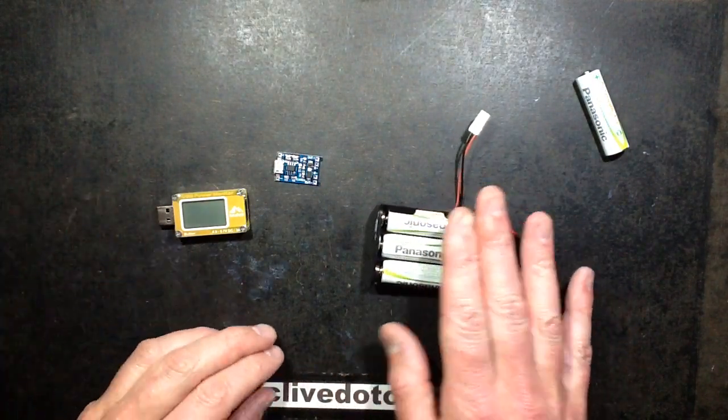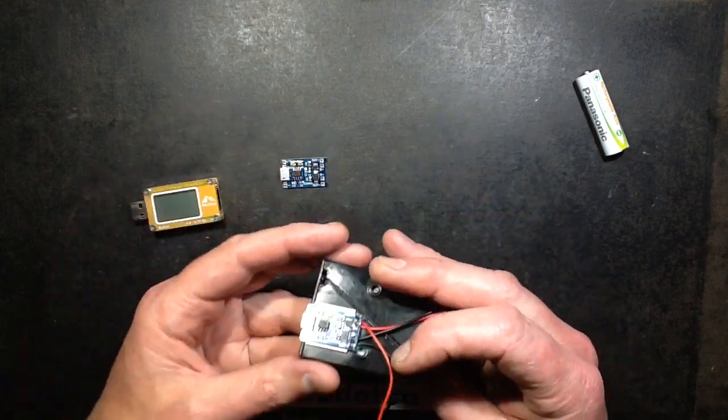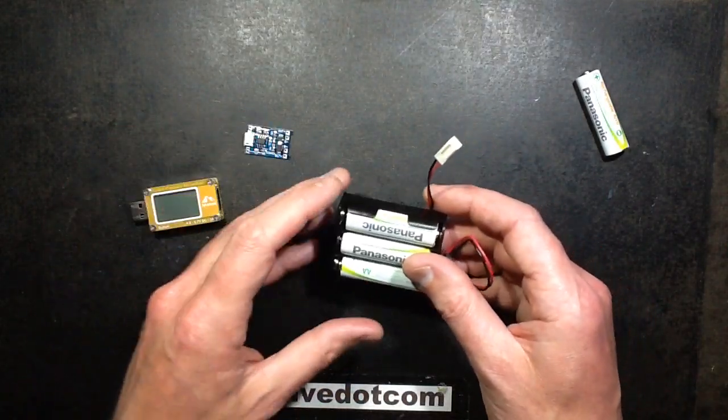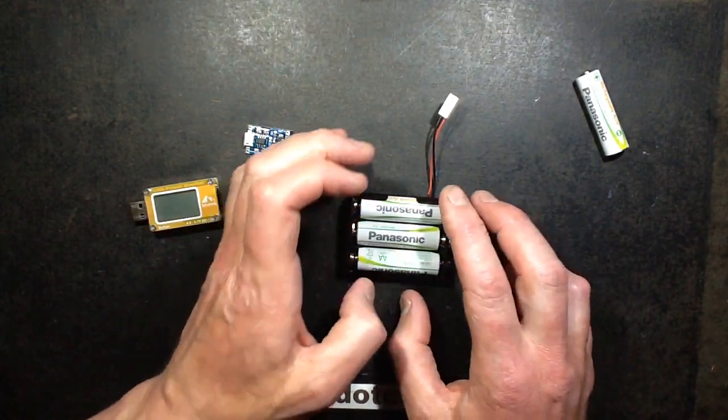The characteristics are actually quite close to three nickel metal hydride cells, and I wondered could one of these modules be used to charge them? It could certainly be used to partially charge them, but it doesn't quite work.